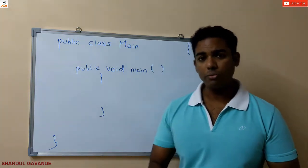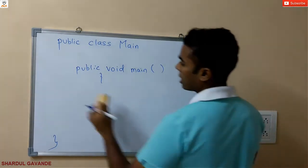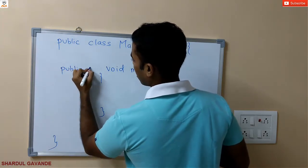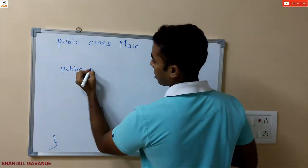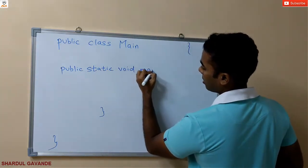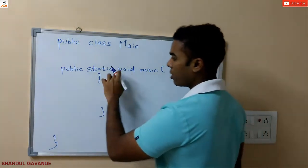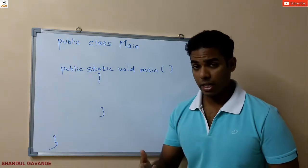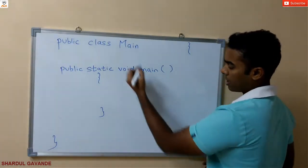But if I don't want to create any objects, then I need to declare this method as static. So I will write here: public static void main — with opening and closing of the method. Whenever your method is declared as static, you don't need to create any objects to access this method.